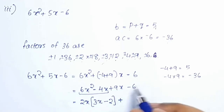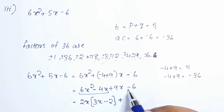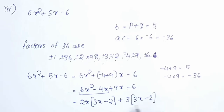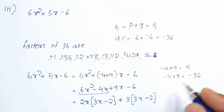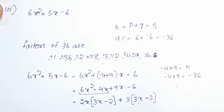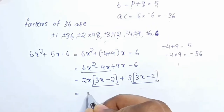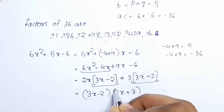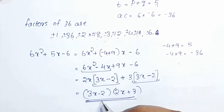We split the middle term: 6x² minus 4x plus 9x minus 6. Taking common factors: 2x is common from the first two terms giving 2x(3x minus 2), and 3 is common from the last two terms giving 3(3x minus 2). So the factored form is 3x minus 2 into 2x plus 3.